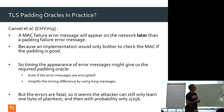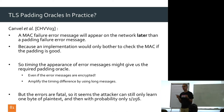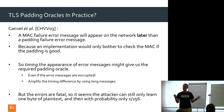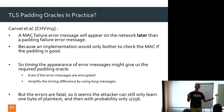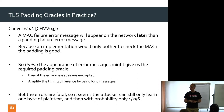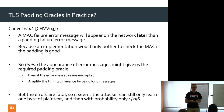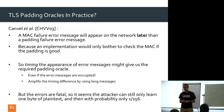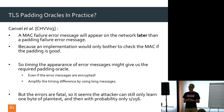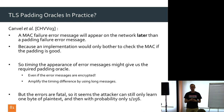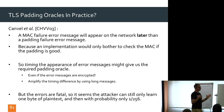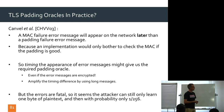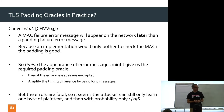They also realized you could amplify the timing difference by making the message as long as possible — the longer the message, the more time MAC checking takes. The maximum TLS message size is about 2^14 bytes. In a realistic experimental setting, they made the timing difference about 2 milliseconds — a huge and easily observable difference, even through a couple of routers.